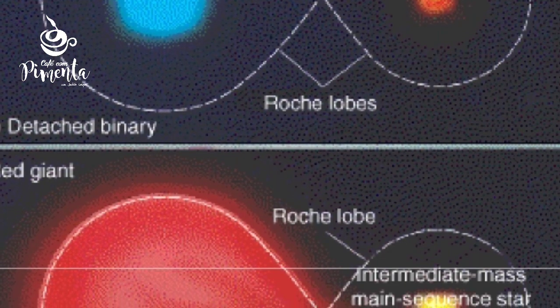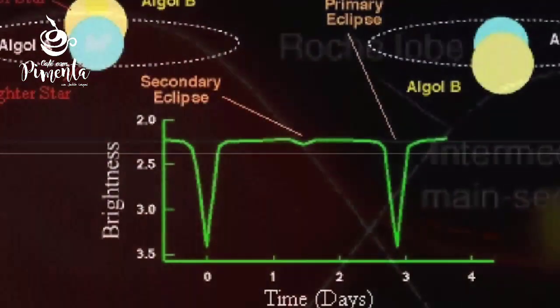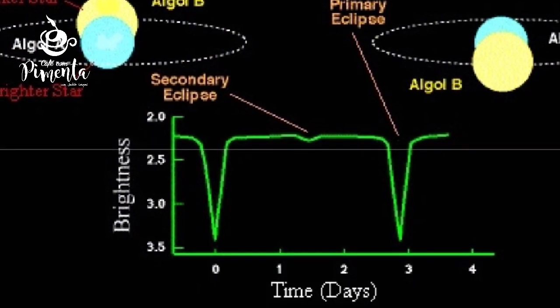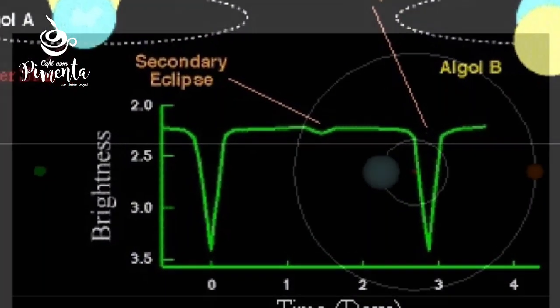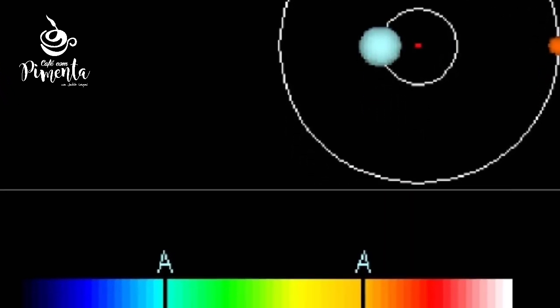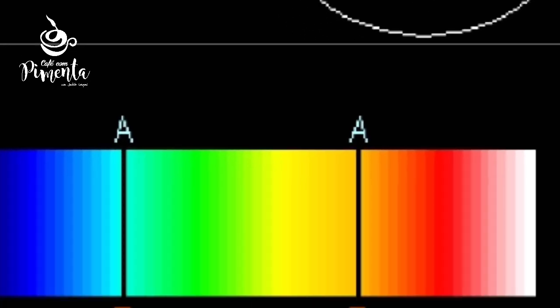Em 1782, John Gottrich propôs que a variação do brilho na estrela Algol, calculada como sendo de cerca de 69 horas, notada por Germaniano Montanari em 1667, devia ser o obscurecimento causado por um corpo não visível orbitando em torno da estrela. A teoria foi confirmada em 1889, quando Herman Carvogel notou variações periódicas no efeito Doppler de Algol, fazendo desta a primeira estrela binária eclipsante e espectroscópica a ser encontrada.